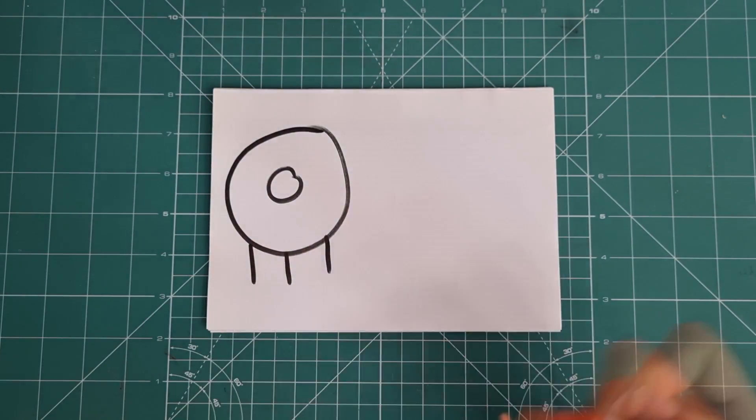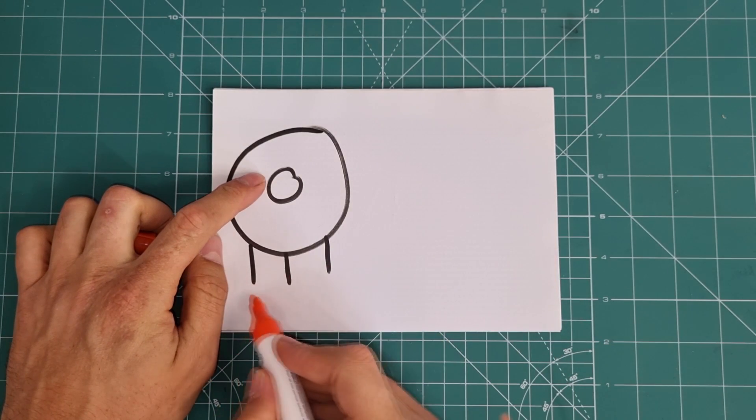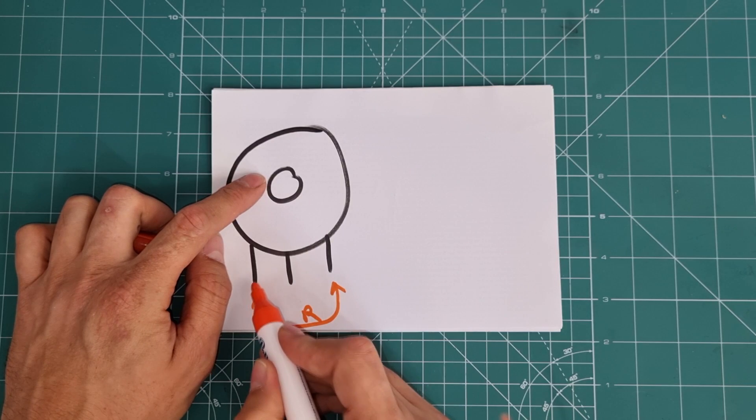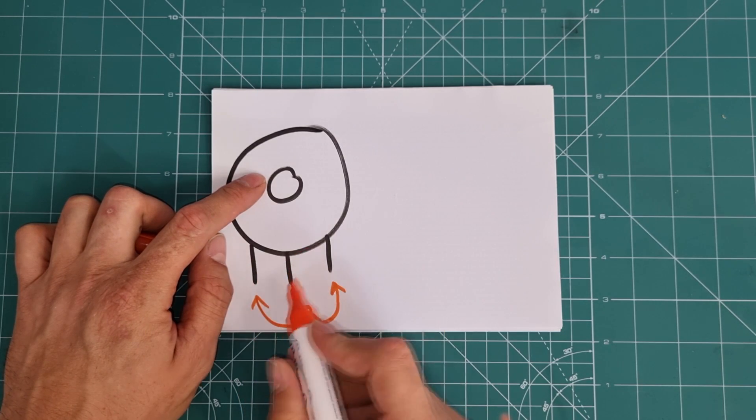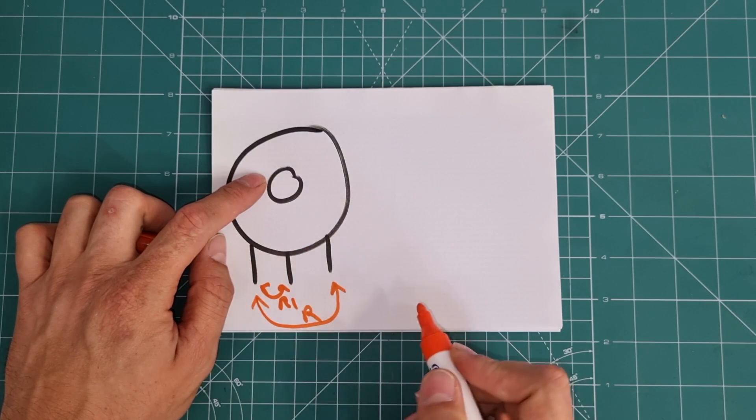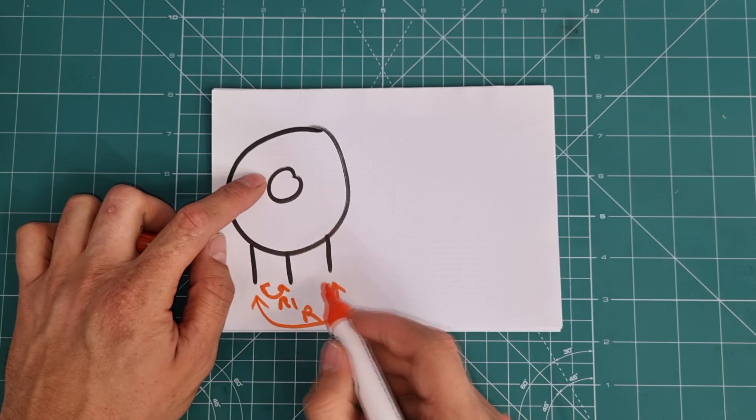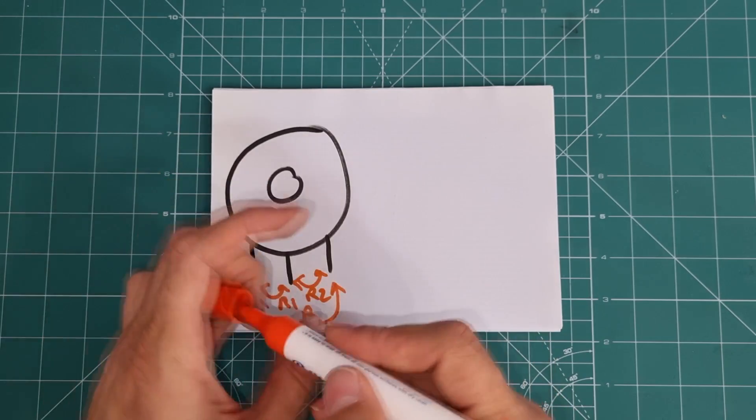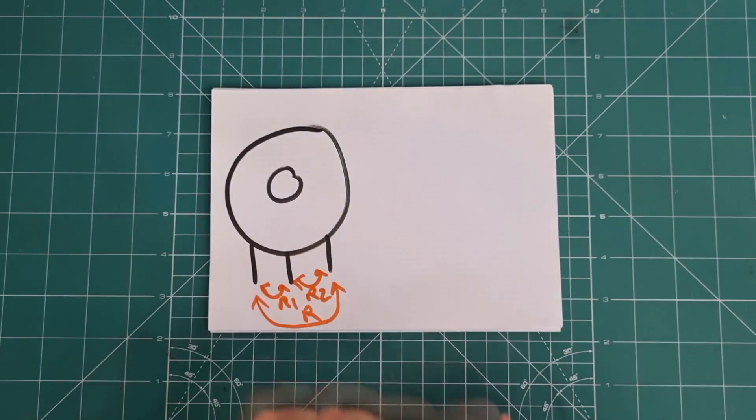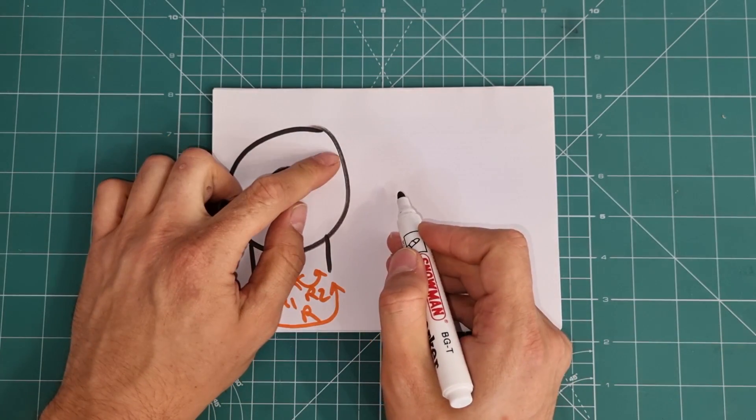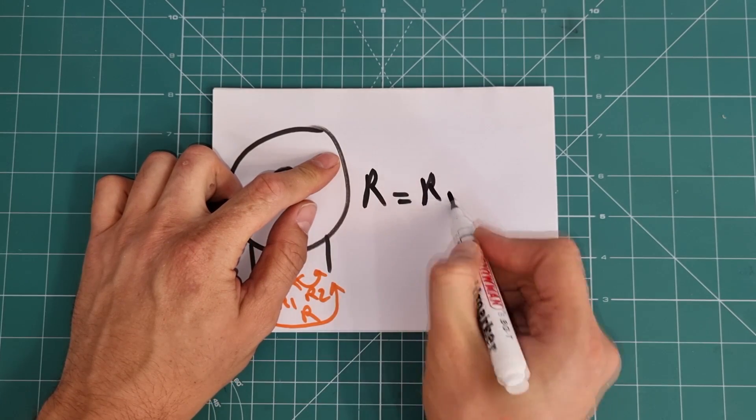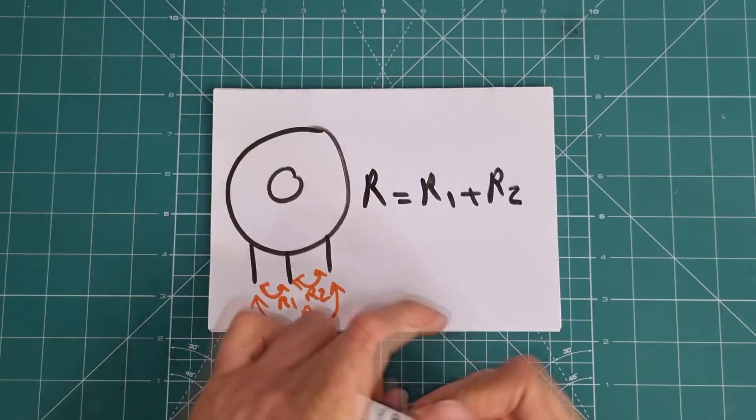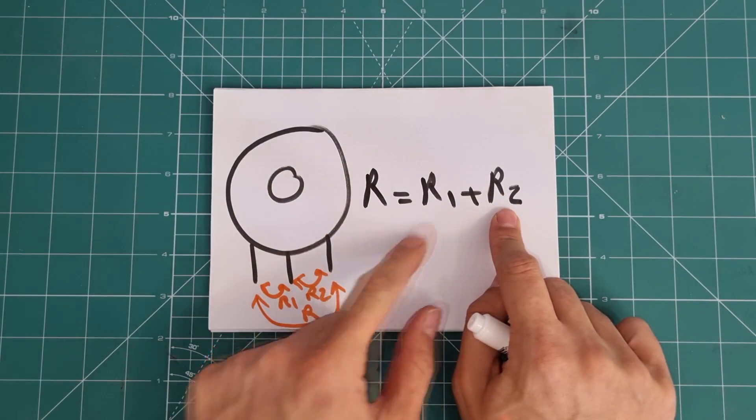Let's name the resistance between side pins as R, and resistance between left hand side pin and middle pin as R1, and resistance between middle pin and right hand side pin as R2. Then we got this equation. In all types of potentiometers, R is equal to R1 plus R2. The exact value of R1 and R2 is related to handle position.